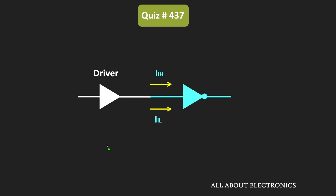The reason is that in the datasheets, the reference direction for the input currents is always assumed to be incoming. But actually, when the input to the logic gate is equal to zero, then this IIL current is always going outwards. That means the actual direction of this current IIL is negative, and it is opposite to the reference direction. And that is why in the datasheet, the value of this IIL current is negative.